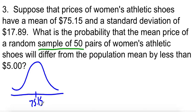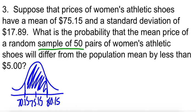We want to know the probability that the price differs from the population mean by less than $5. So we can be $5 this way, which would be $80.15, and we can be $5 this way, which would be $70.15. So we want to know what's the probability that in our sample of 50 shoes, the average price falls in that region.